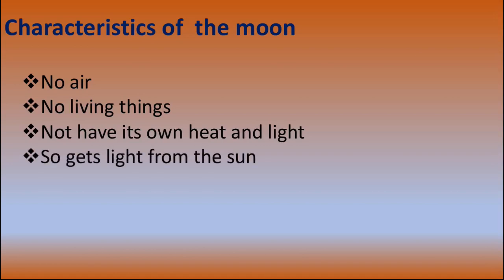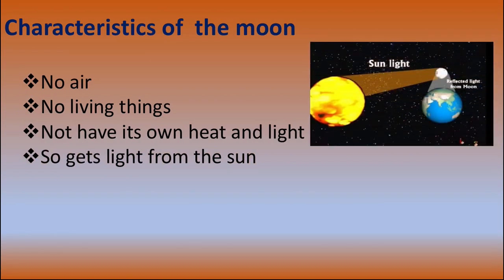The moon gets light from the sun. The sun is a star but the moon is not a star — the moon is a satellite and a dusty ball of rock, so it does not burn. Stars burn and give heat. So the moon gets light from the sun. You can see in the picture the Earth is moving around the sun and the moon is moving around the Earth. The moon does not shine with its own light; it simply reflects light coming from the sun.